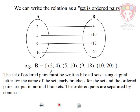The first number here is part of the domain. And the second number is part of the range of the mapping and is found in the co-domain. So the set of ordered pairs must be written like all sets using a capital letter to denote the set, a curly bracket, a comma between each of the elements. And because we're dealing with ordered pairs, they are put in normal brackets separated by commas also.